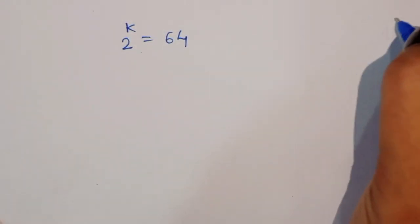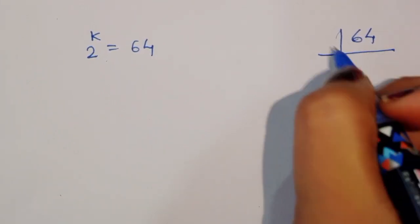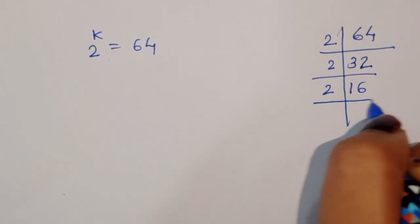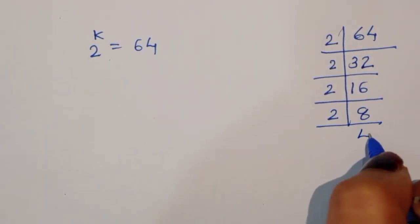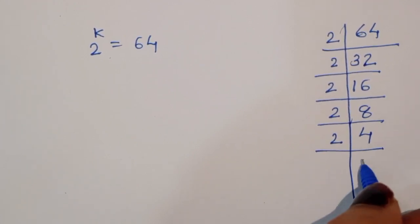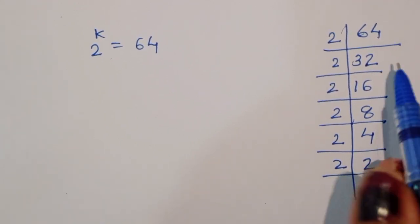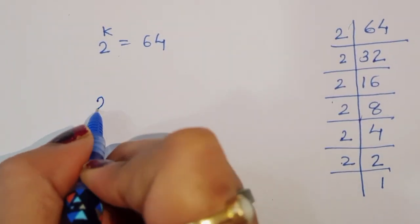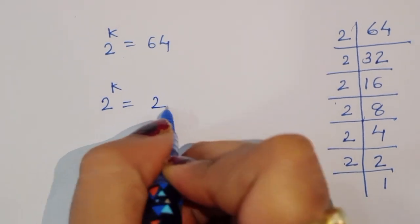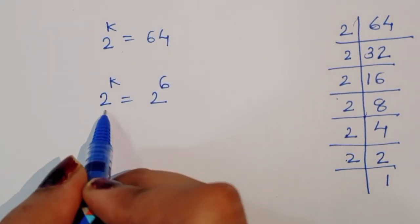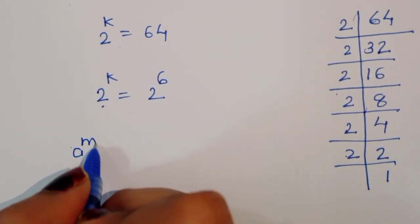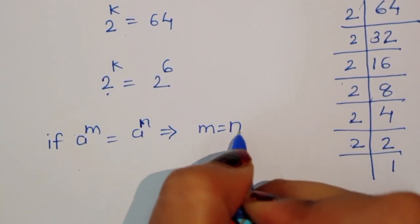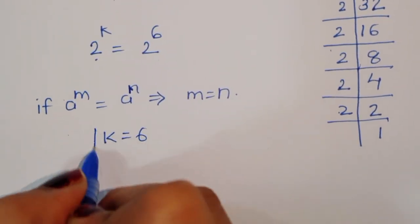Now, 2 power k equals 64. Taking the factors of 64: 2 to the power 6 equals 64. So 2 power k equals 2 power 6. Since the bases are the same, using the formula a power m equals a power n implies m equals n, we get k is equal to 6.